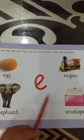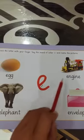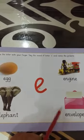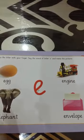E a egg. E a engine. E a elephant. E a envelope. E a egg. E a engine. E a elephant. E a envelope. Now we start to write letter E.